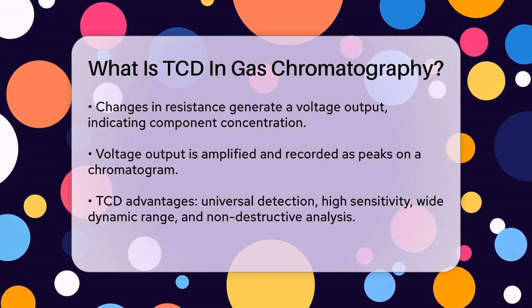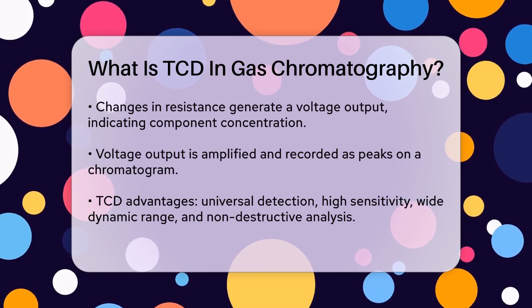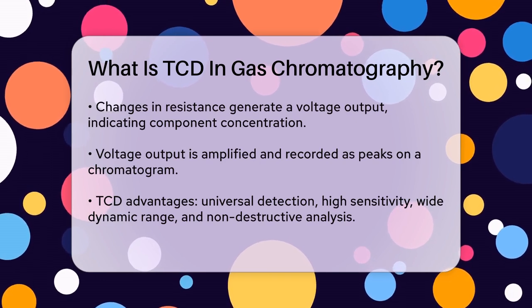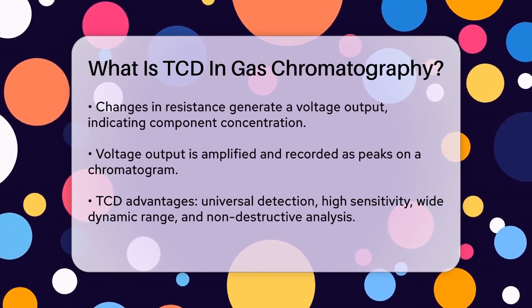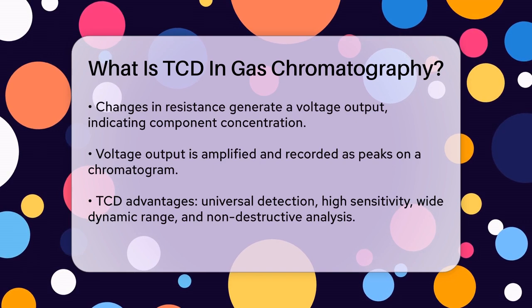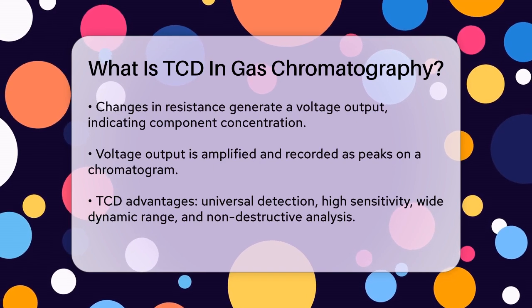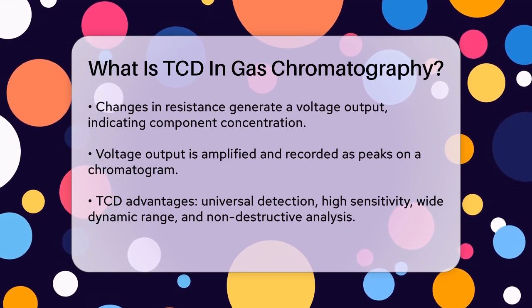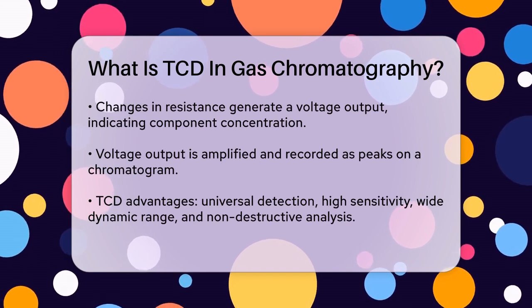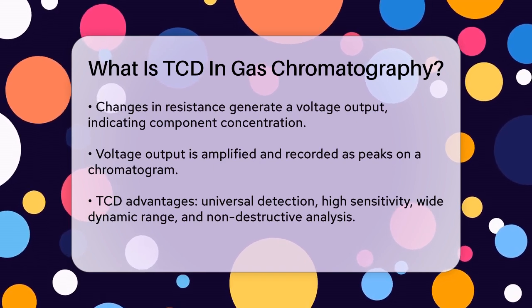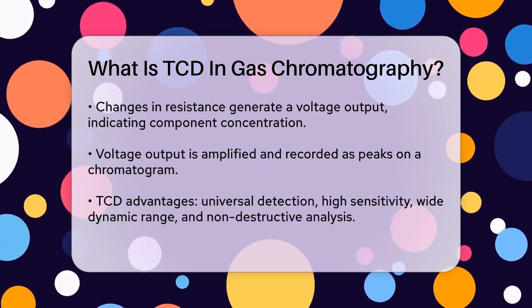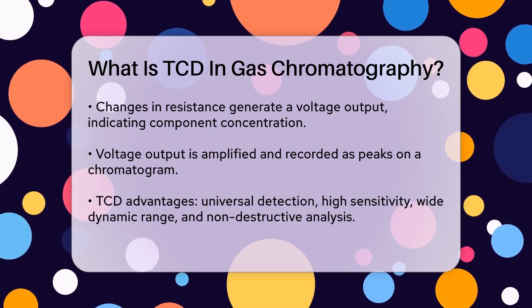This voltage output is then amplified and recorded as a peak on the chromatogram, which is a graphical representation of the separation. The size of the peak tells us how concentrated the component is in the sample.